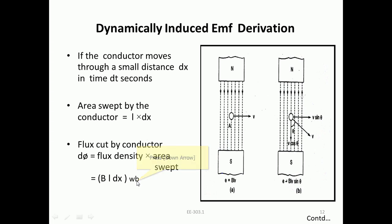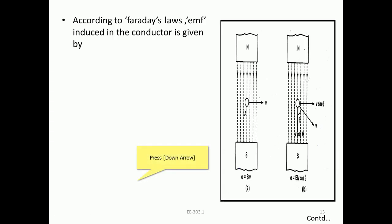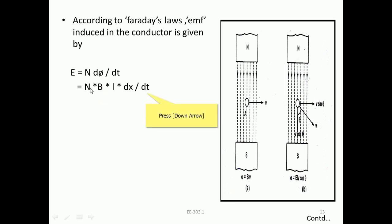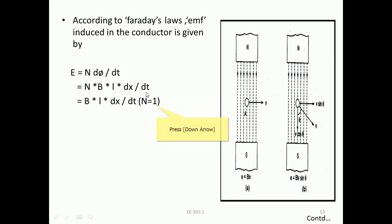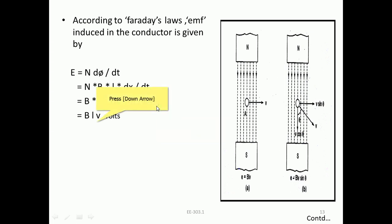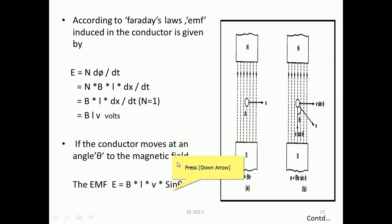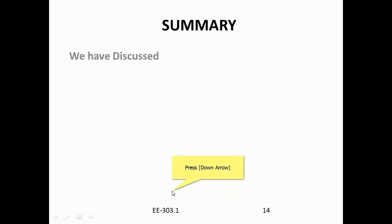By Faraday's law, the EMF in the conductor equals minus N dΦ/dt. Here, N is the number of conductors. This gives EMF equals BLv. If the conductor moves at an angle theta, the formula becomes EMF equals BLv sine theta.